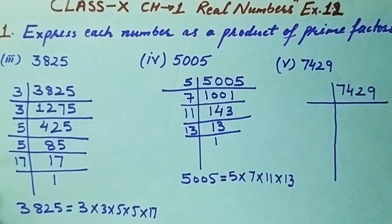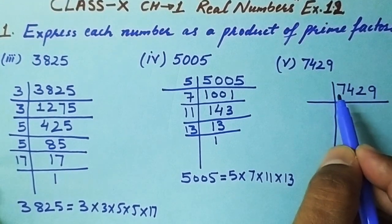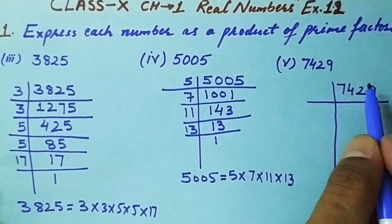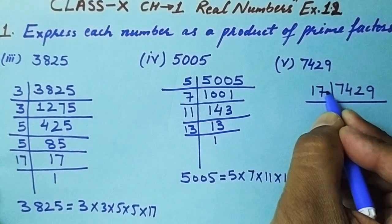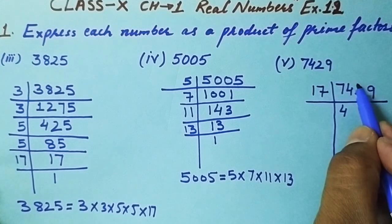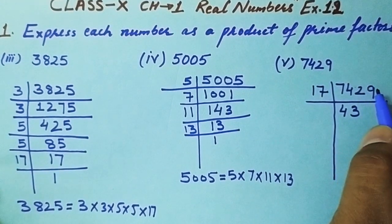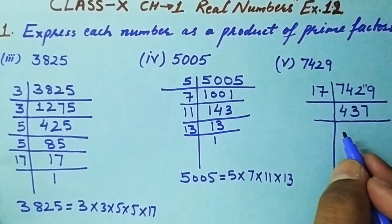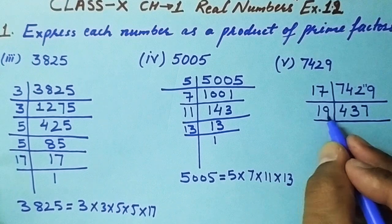The next number is 7429. Checking this number with prime factors 2, 3, 5, 7, 11, and 13 — it is not divisible by any of these. It is directly divisible by 17. Dividing: 7429 ÷ 17 = 437. Now checking 437: it is not divisible by 17, but it is divisible by 19.